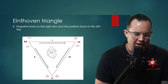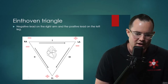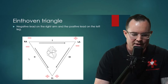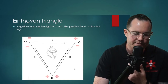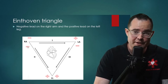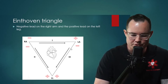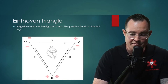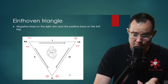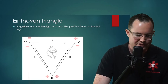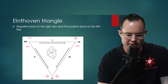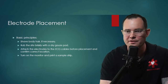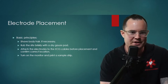Einthoven's triangle: negative lead on the right arm, positive lead on the left leg. Placing our leads in the right location gives a proper view of the heart. The right leg is known as ground. Make sure leads are in the right locations for a proper reading. Shave body hair if necessary and ensure good pad-to-skin contact — just like with defibrillation pads. Too much hair or wet skin will affect the reading.